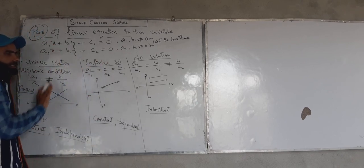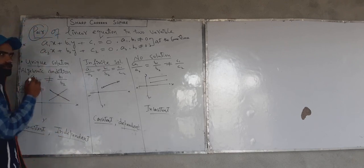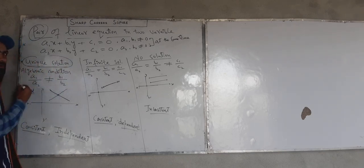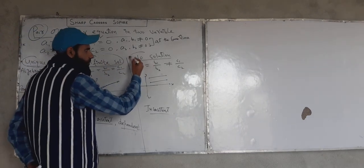We have already discussed about the introduction here of linear equations in two variables. We know about their solution. Their solution can be three types. Their solution must be maybe unique solution, infinite solution, or no solution.